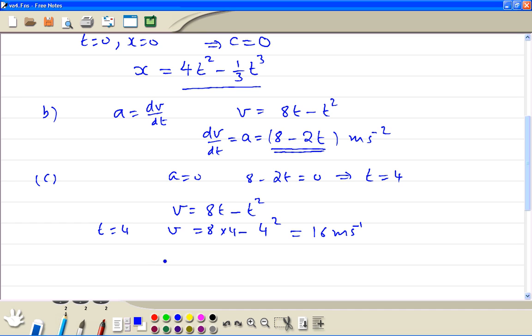Then we find the displacement when t is equal to 4. x is equal to 4 times 4² minus 1/3 times 4³, so that's 64 minus 64 divided by 3. Using the calculator, we get 42.7 meters.